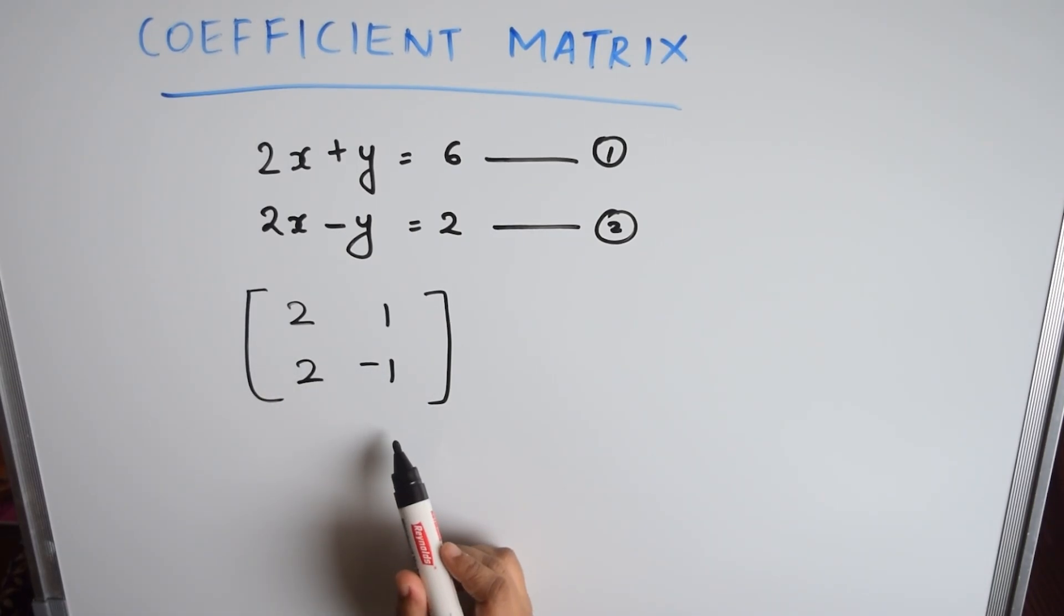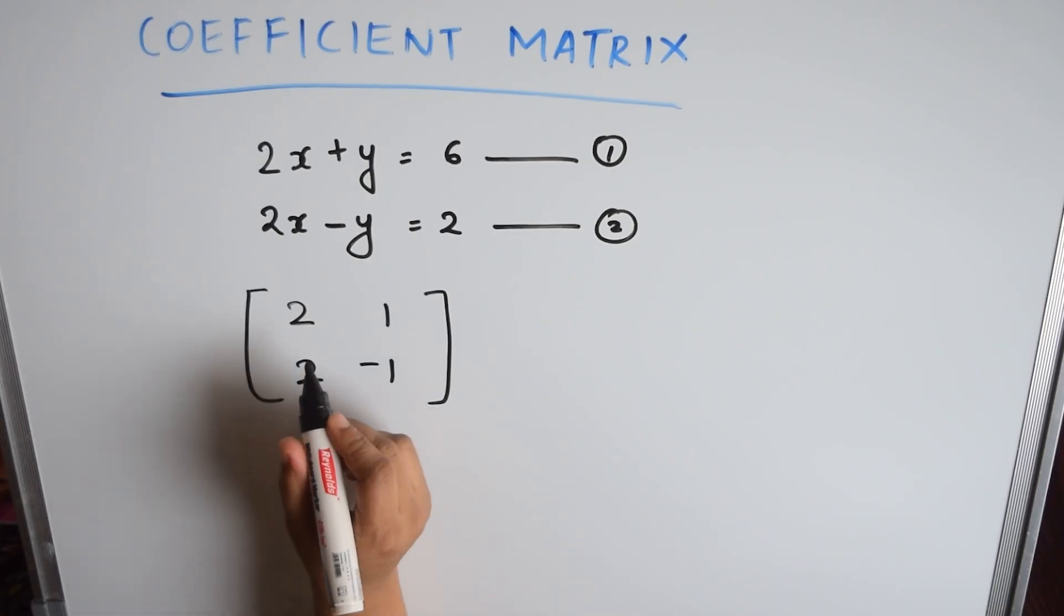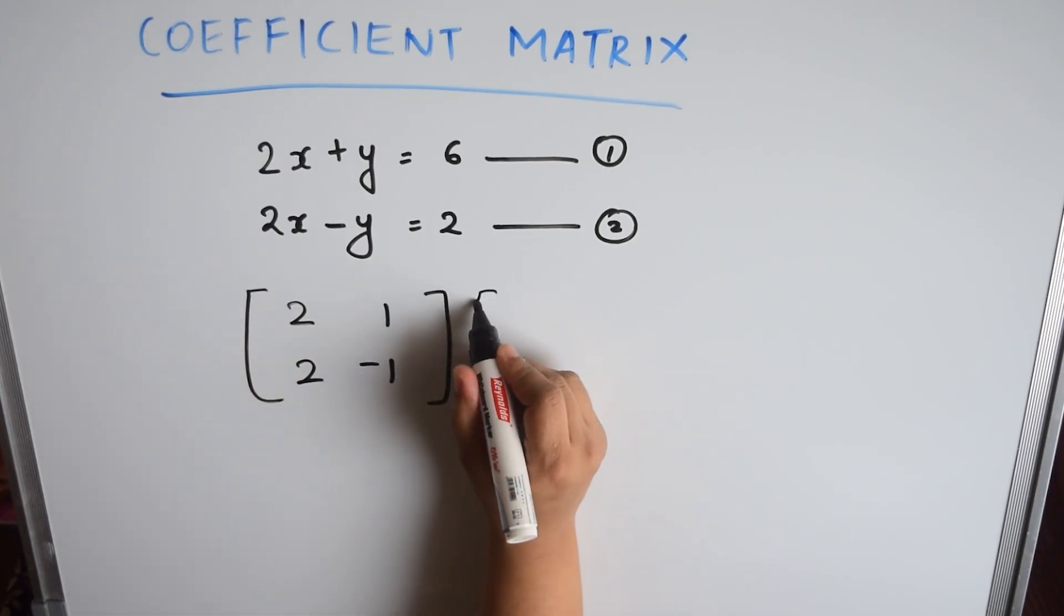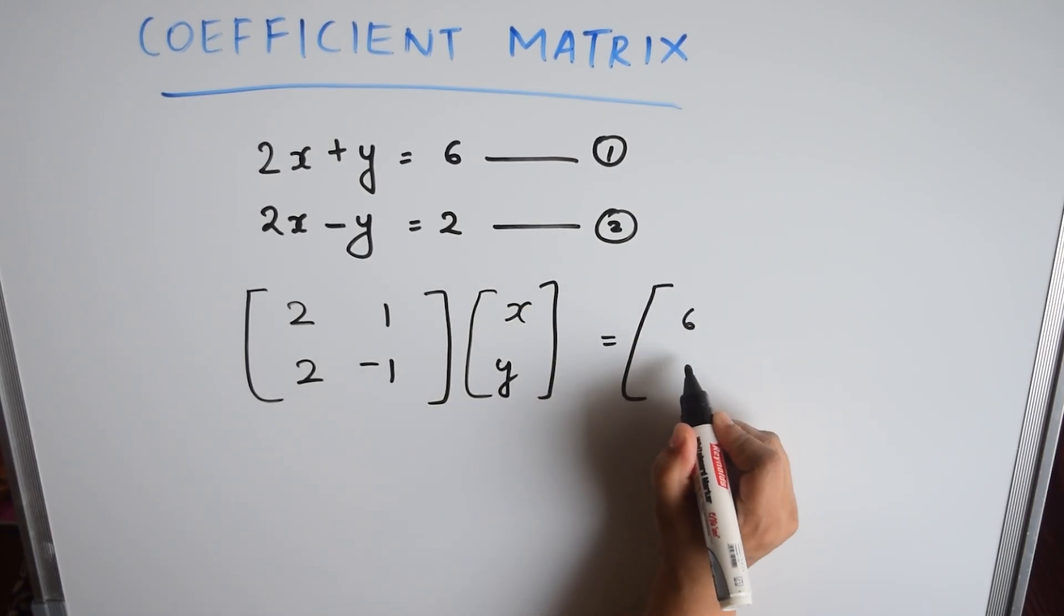Now, such a matrix formed from the equations is called a coefficient matrix. Now, using this coefficient matrix, we can write the set of equations in matrix form like 2, 1, 2, minus 1 into x, y is equal to 6, 2.